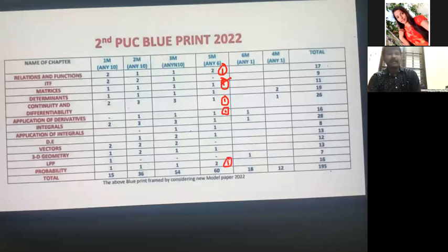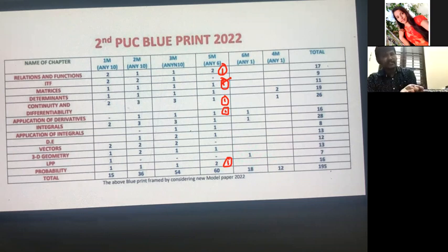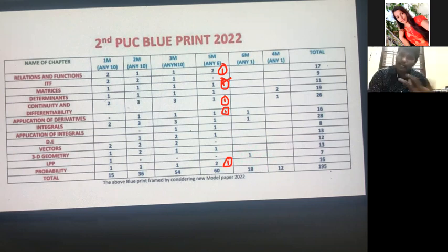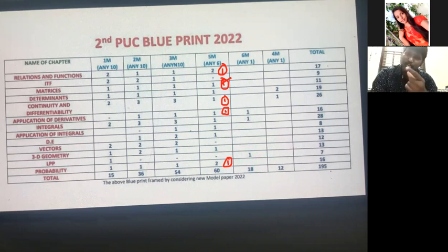The sixth question is your choice. I suggest don't go with Determinants because once you start it, it takes more time. If you know both Relation and Functions questions, you can do one. If you know Probability well, do that. If you are thorough with Integrals, do the Integrals question. Or you can choose Differential Equations. The sixth question is entirely your choice.